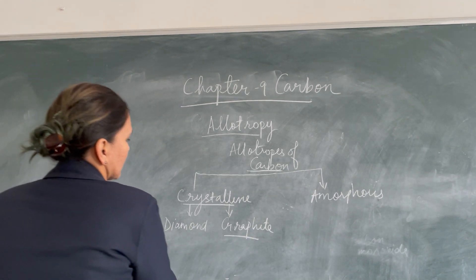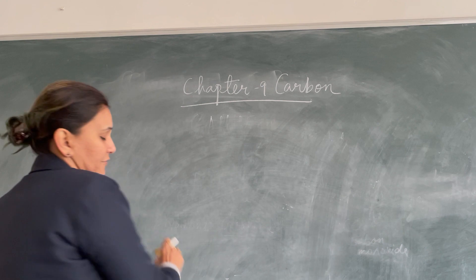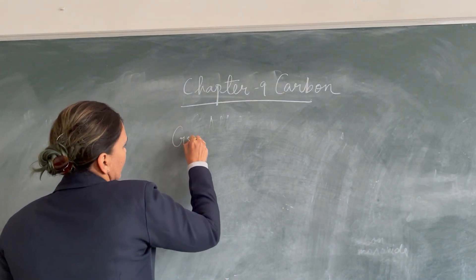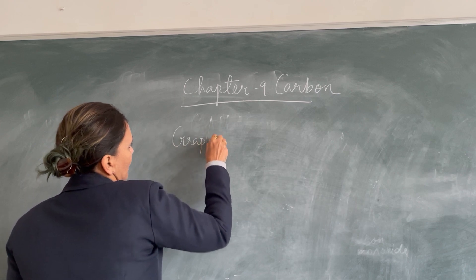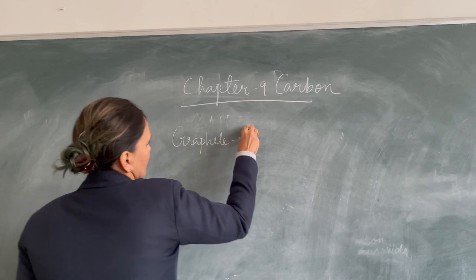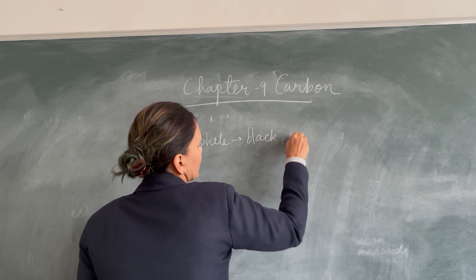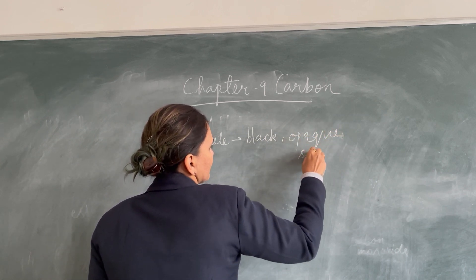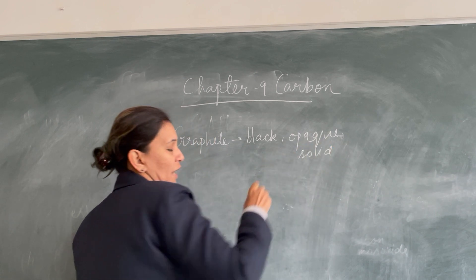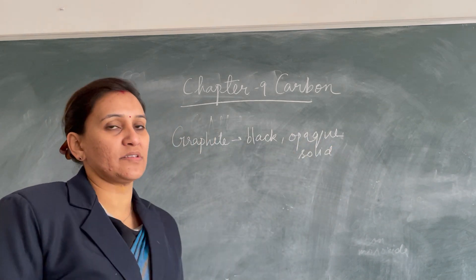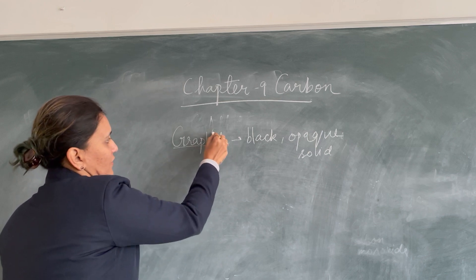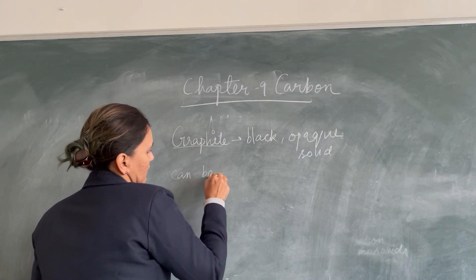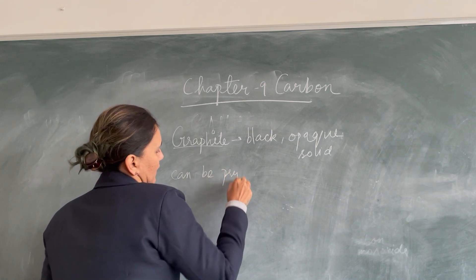Let us now discuss the properties and uses of graphite. Graphite is a black opaque solid that is found in different countries like China, India, South Korea, etc.